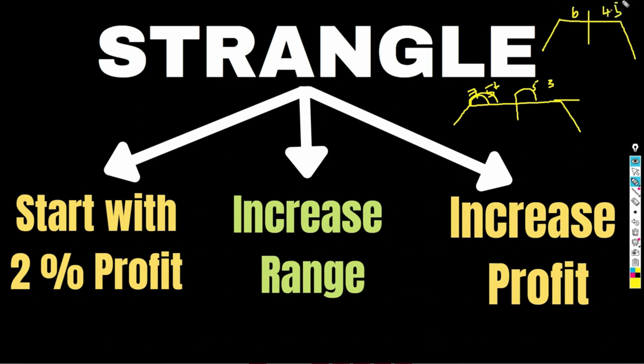The disadvantage is your maximum profit decreases. But when the market gave a 3% gap up, are you still looking for profit? Your view has already gone wrong — you thought the market would be sideways. If you're still chasing profit after a 2-3% gap, no one can help you. You have to start mitigating the loss. Forget about profit for now — gap ups and gap downs are the main threat to option sellers.